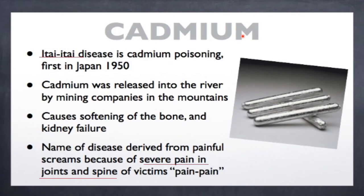Cadmium: Itai-itai disease is caused by cadmium poisoning and was first observed in Japan in the year 1950. Cadmium was released into the river by mining companies in the mountains. It causes softening of bones and kidney failure. The name of the disease is derived from the painful screams of victims due to severe pain in the joints and spine — they would scream 'pain, pain,' which is how the name was derived.